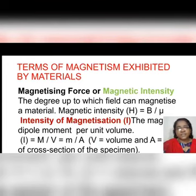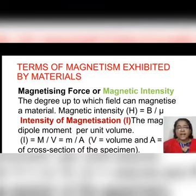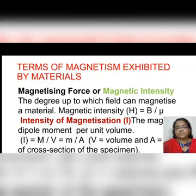Next is the magnetizing force or magnetic intensity. In the activity with soft iron and a current-carrying coil, we have seen that the soft iron core becomes magnetized on passing current through the coil. So the soft iron is magnetized due to the magnetic field produced by the passage of current through the coil. That magnetic field present in the coil is the external magnetic field which is magnetizing the specimen. Its magnetic intensity is denoted as H, which is the ratio of magnetizing intensity to the magnetic permeability. Magnetizing force or magnetic intensity is the ratio of magnetic induction to the magnetic permeability.